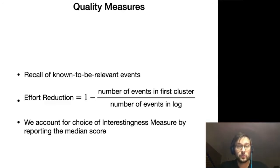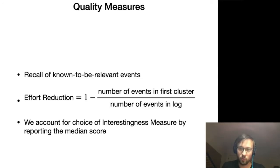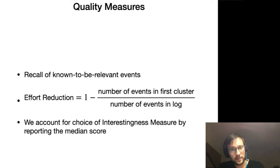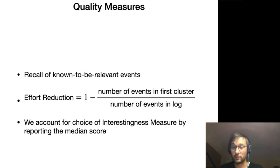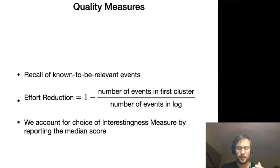When benchmarking this tool we use two quality measures. We use recall, which is simply the proportion of relevant events retrieved — where relevant is defined by the events identified by our regular expressions, though we can't guarantee that is the unique or complete set. We also use effort reduction, measured such that the fewer events relative to the total number of events in the log that are retrieved to the end user, the higher the effort reduction. The choice of interestingness measure is always important, so we account for that by reporting the median score obtained when trying all of the interestingness measures, since there is in general no globally optimal interestingness measure.